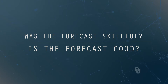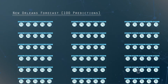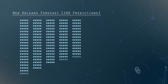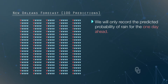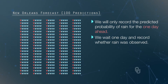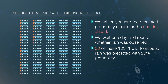Let's imagine 100 forecasts for the five days ahead and record only the predicted probability of rain for the one day ahead — here 20%. We wait one day and record whether rain was observed. Suppose for 30 of these 100 one-day forecasts, rain was predicted with 20% probability.